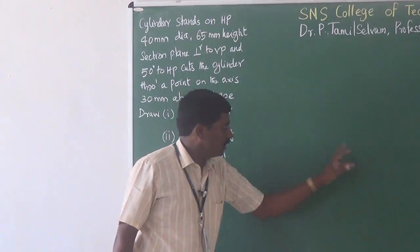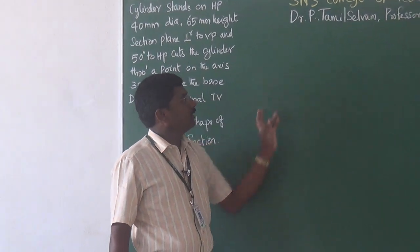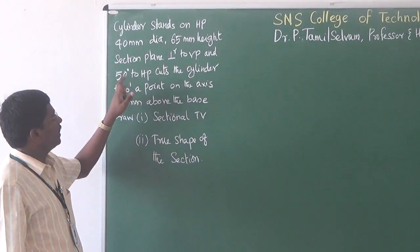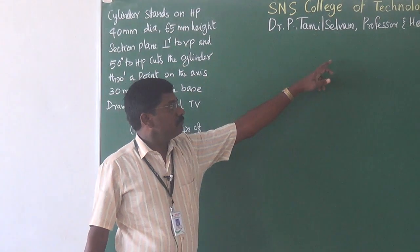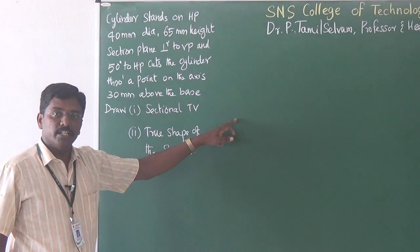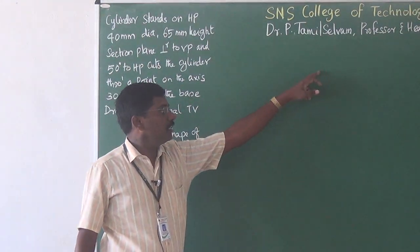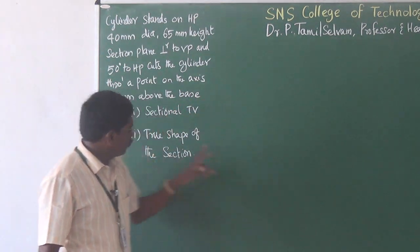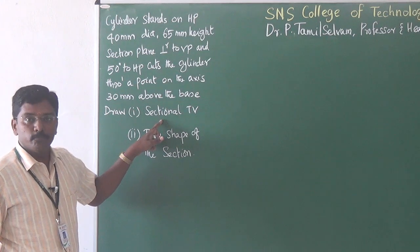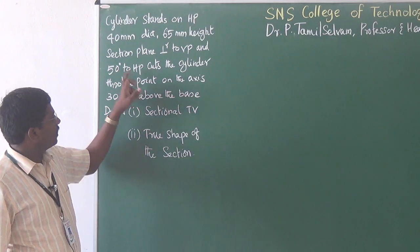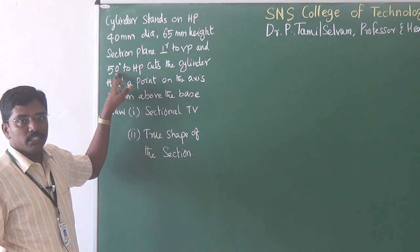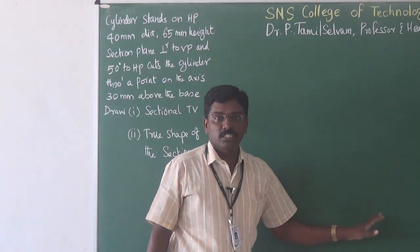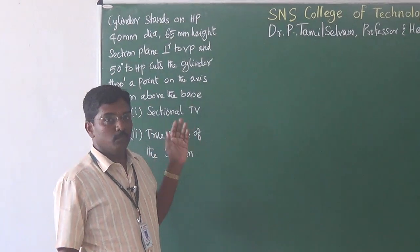For the projection of solid, we first draw the top view and then the front view as a rectangle. The section plane is perpendicular to VP and 50 degrees to HP, so it will be visible as a line in the front view. Therefore, we introduce the inclined cutting plane in the front view and then project the points to the top view to form the sectional top view. Then for the true shape of section, because the cutting plane is inclined 50 degrees to HP, we have to project from there.